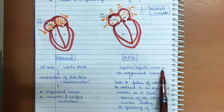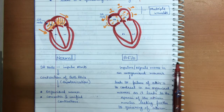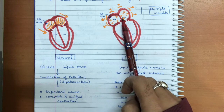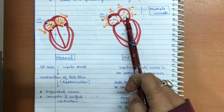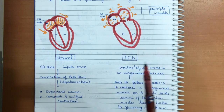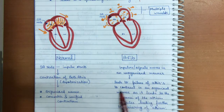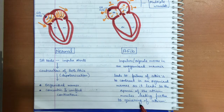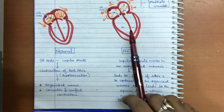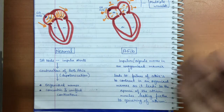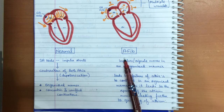In an atrial fibrillation patient, the impulse signals move in an unorganized manner because multiple wavelets are formed. Various foci are generated, leading to different refractory periods, which causes the atria to fail to contract in an organized manner. This leads to spasms of the atrial muscles and quivering of the atrium — this is the underlying mechanism of AFib.